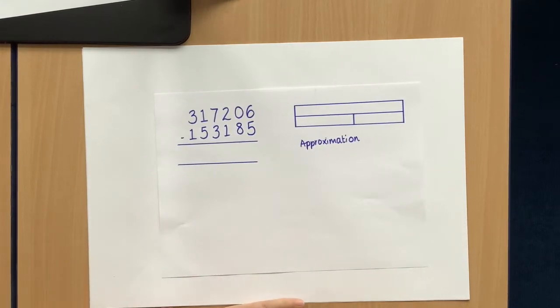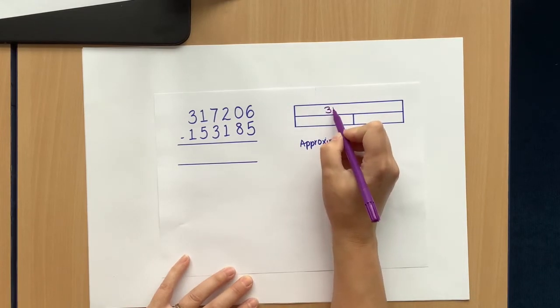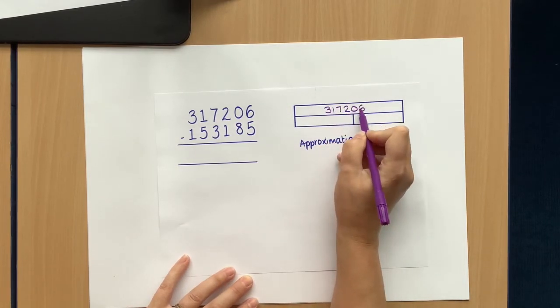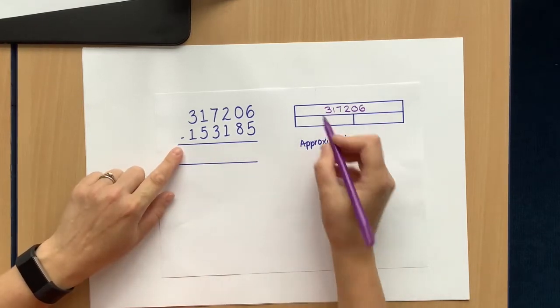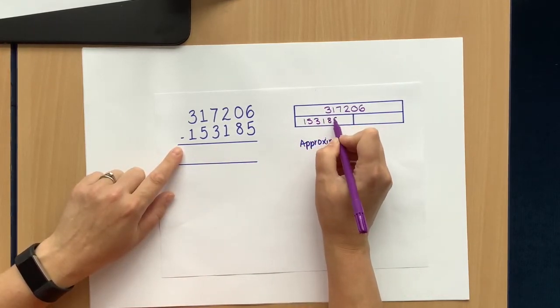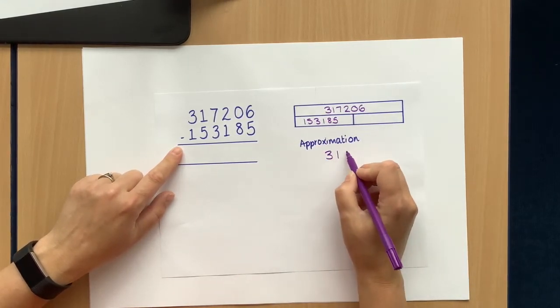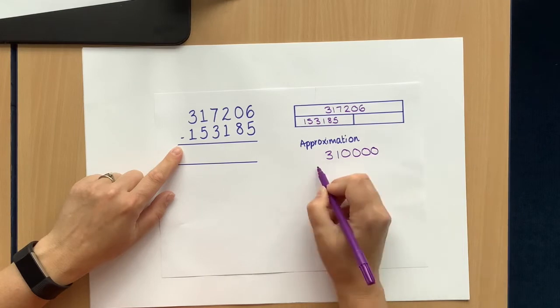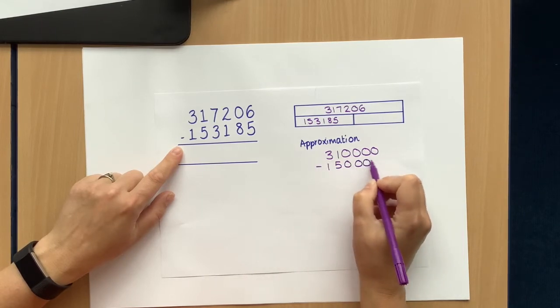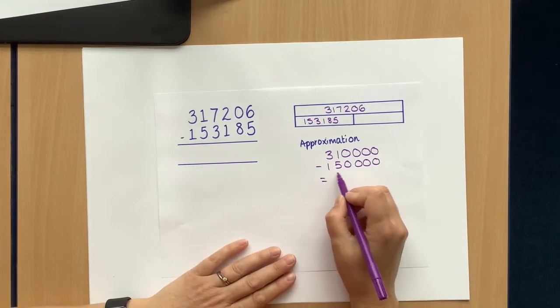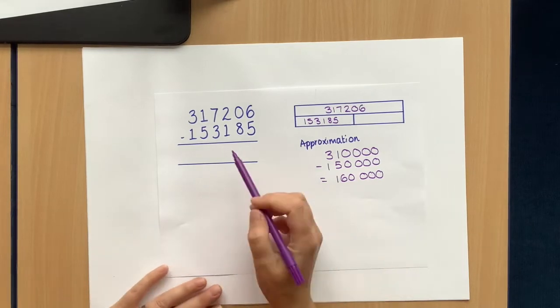Let's do one for each of the operations. Now we've got a subtraction. So this time, I'm starting with my total because that's what happens in a subtraction calculation. So that goes there in the bar. And then this one can go either side, really. I'm going to put it here. A good approximation would be 310,000 take away 150,000 or thereabouts. So 160,000 is my approximation. It should be around about there.